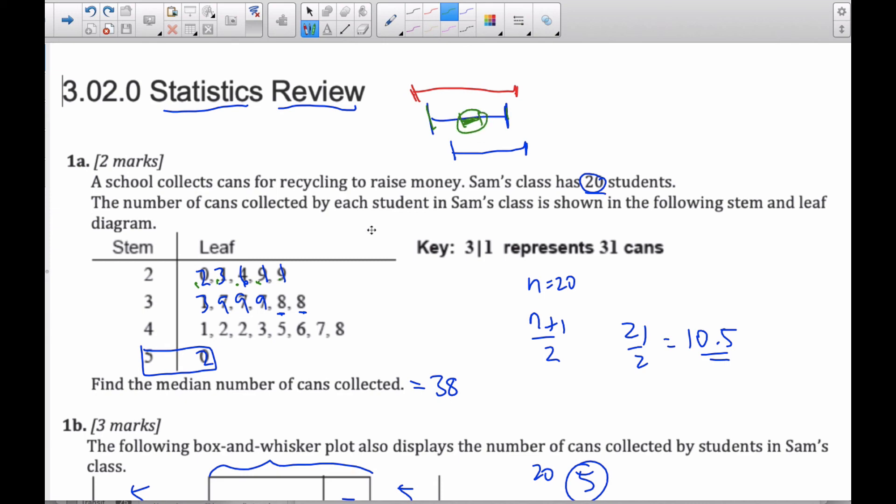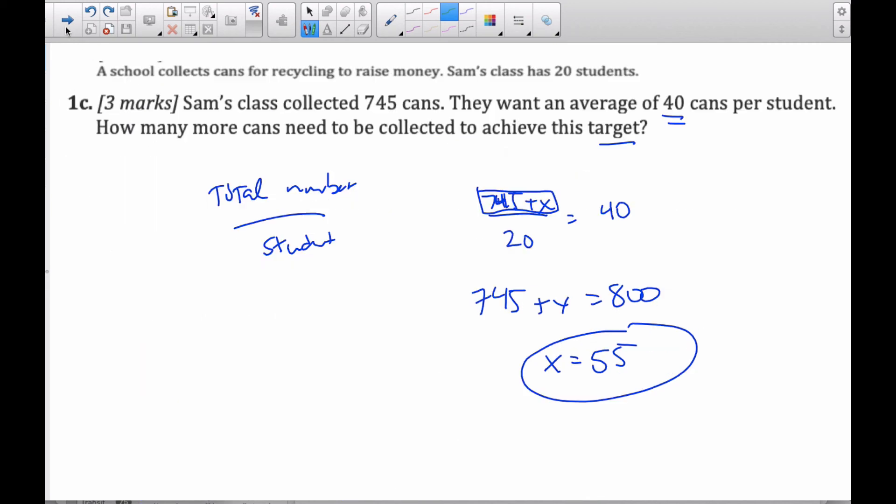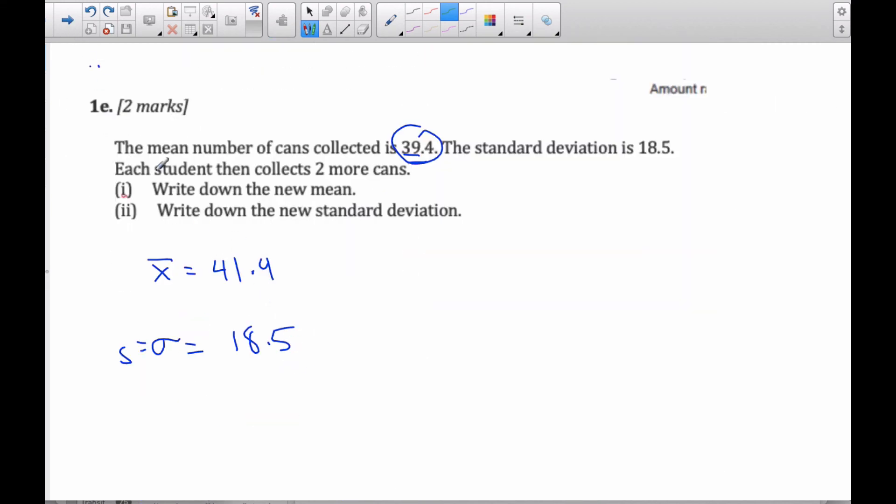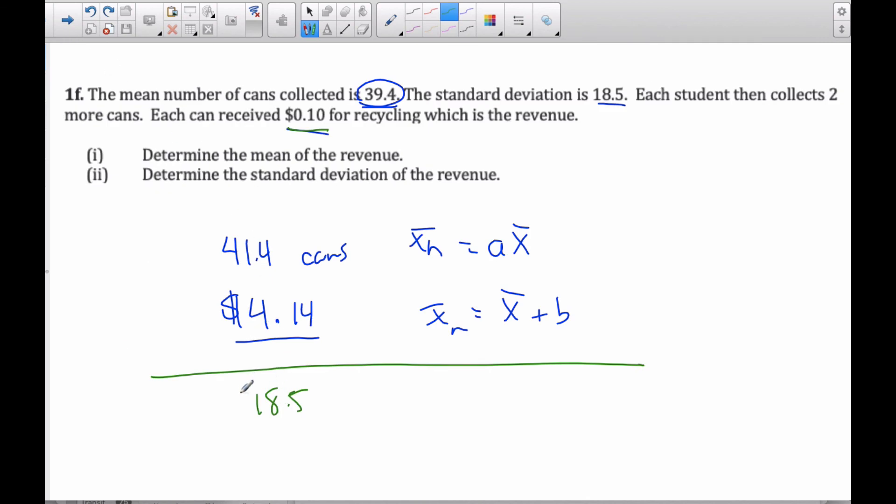And so in essence, what happens, this interval that was this long shrinks to this long, because the numbers are smaller. And so when I multiply these values by something, it does affect the standard deviation. And so 18.5 is not affected by this, but it is going to be multiplied by 0.1. And so the new standard deviation will be $1.85 as the new standard deviation, because the standard deviation does get multiplied by values, but it does not get affected by the adding.